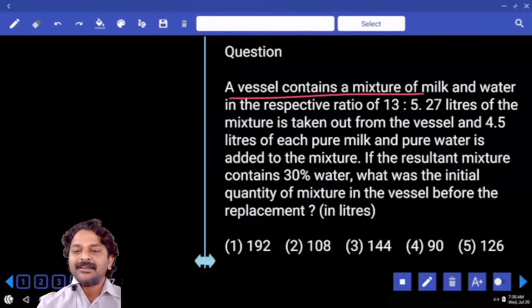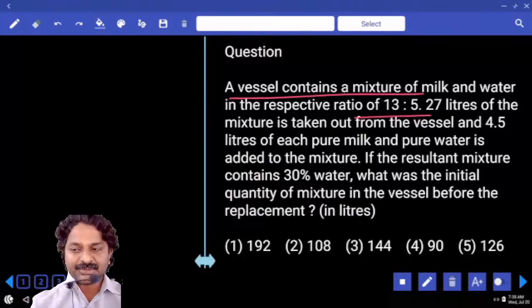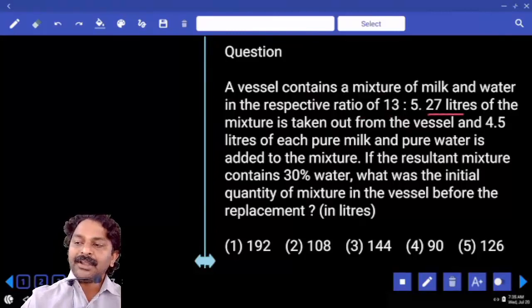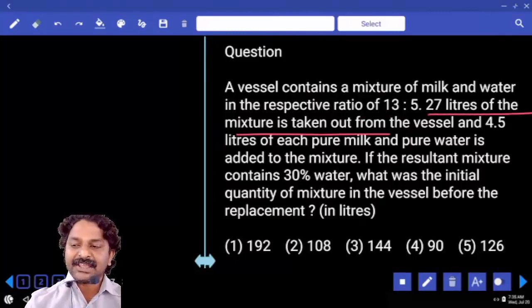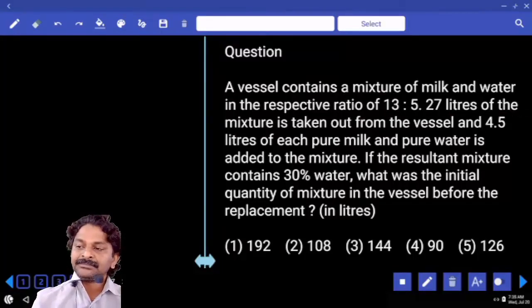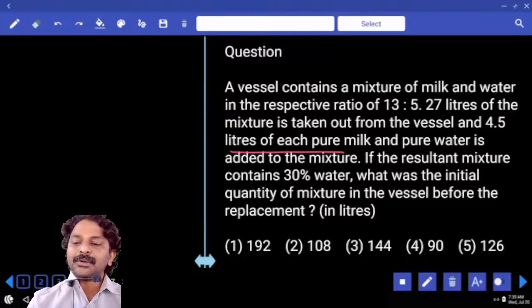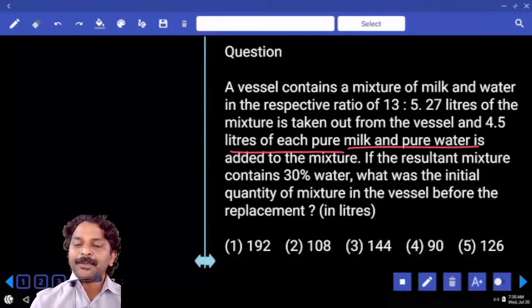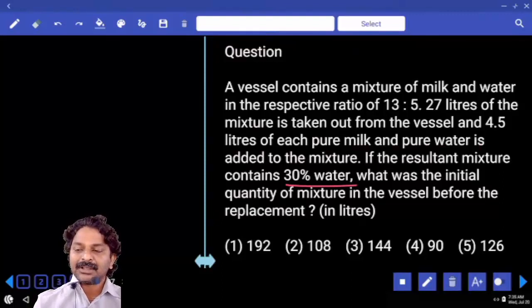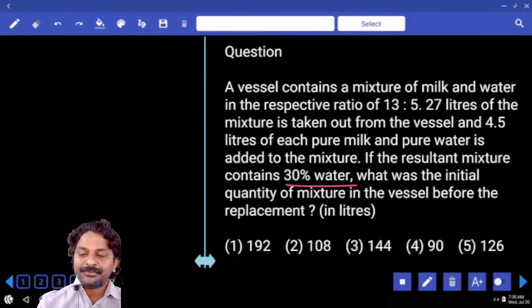A vessel contains a mixture of milk and water in the respective ratio 13:5. 27 liters of this mixture is taken out from the vessel and 4.5 liters of pure milk and pure water is added to the mixture. If the resultant mixture contains 30 percent water, what was the initial quantity of mixture in the vessel before the replacement?